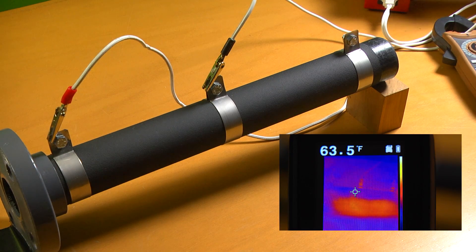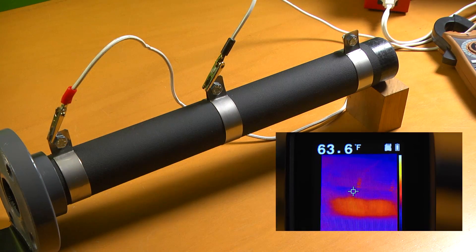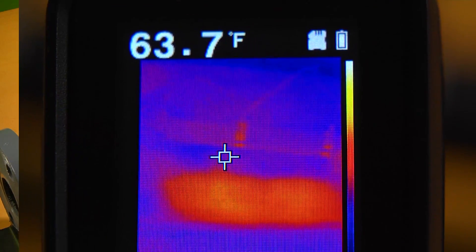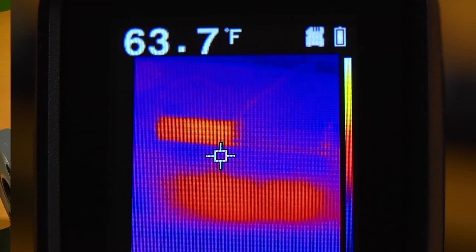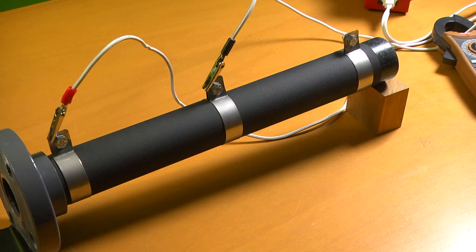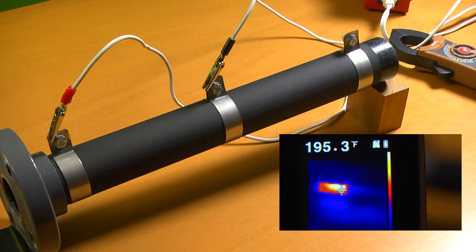This PVC pipe has been painted with Thermal Coat. Notice the temperature of the pipe barely registers on the thermal camera. Now, watch what happens when electricity is applied. Only the left side of the pipe is energized, as can be seen by the red glowing part of the thermal image. This time-lapse shows it took about two minutes for the temperature to reach over 200 degrees.